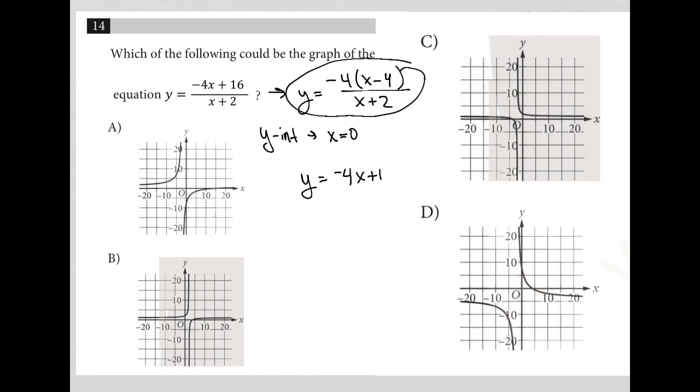So, negative 4x plus 16 over x plus 2. If x equals 0, this whole term is gone, and this term is gone. I'd end up with y equals 16 over 2, which is 8. So, I know that the correct answer needs to have a y-intercept at positive 8.